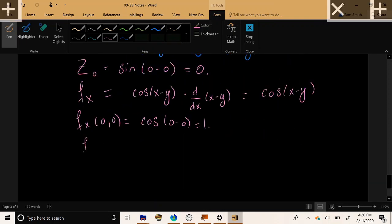Now for f sub y, using chain rule again, we have cosine of x minus y, derivative of the outer function, and then we take the derivative with respect to y of the inner function. Now x vanishes, it's constant, and the derivative of negative y becomes negative 1.